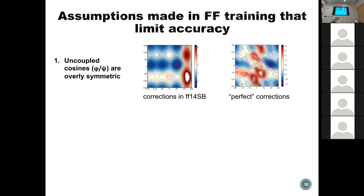The target correction — calculated using QM minus MM without any backbone dihedral — clearly doesn't look like the symmetric 14SB correction. In the target correction map, we see diagonal features, which show this is a 2D problem instead of a 1D problem. Another assumption is that the backbone dihedral dependence on atom type is insufficient because we use the same atom type for all backbone dihedrals. We train against alanine and apply to all, but alanine might not be a very good model since it has the highest helical propensity.